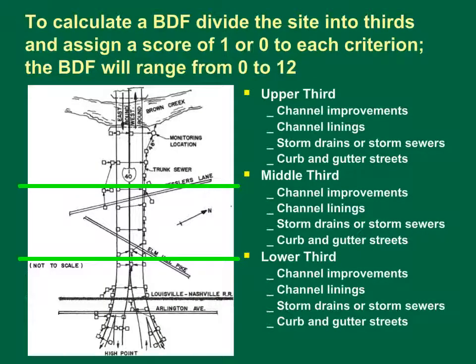This is a plan view diagram of the I-40 highway drainage system in Nashville, Tennessee, from Federal Highway RD-81045. The small rectangles are the catch basins and the arrows connecting them are the storm sewer pipes. In this diagram, water flows from the high point at the bottom to Brown Creek at the top. The text on the right side shows the outline for developing the BDF score in each third of the basin.